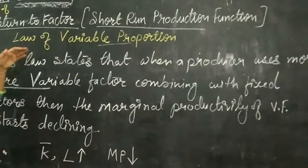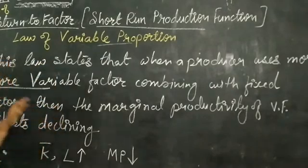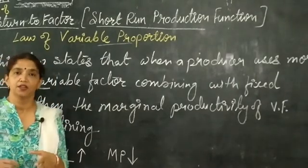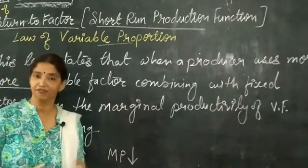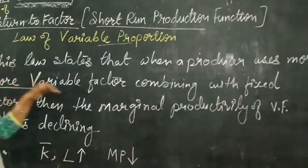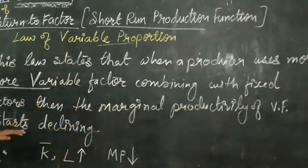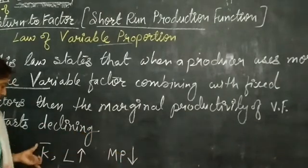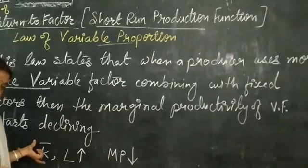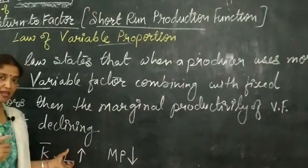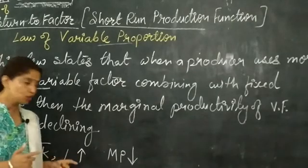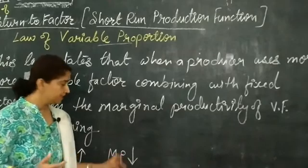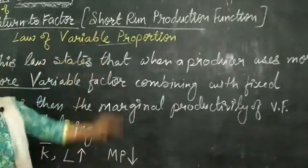This law states that when a producer uses more and more variable factor combined with a fixed factor, the marginal productivity of the variable factor starts declining. For example, capital remains fixed but the number of laborers can be changed. As the producer increases laborers, the marginal productivity of laborers starts declining. This is the law of variable proportion.